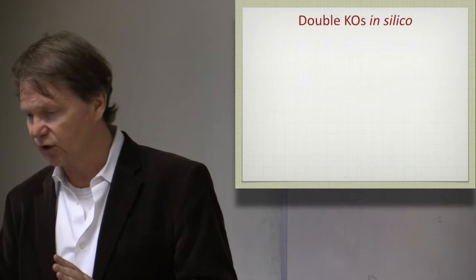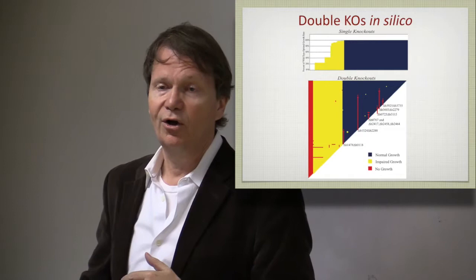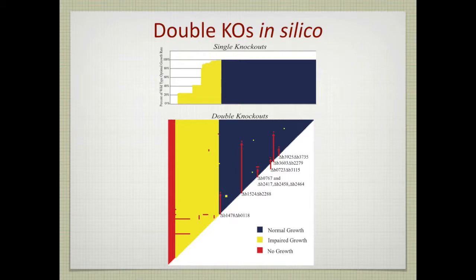Now, you can actually also do multiple knockouts in silico. And this is, of course, much easier to do computationally than experimentally. Although, I must say, now with the new genetic editing tools, we'll probably be making large double knockout libraries and maybe triple knockout libraries and who knows what. But in silico, this is pretty easy. So, on the top of this panel here, we show the outcome of single gene knockouts. You can take each one of the single gene knockout strains and then remove all the other genes and pair them up in that way. And then you get those predictions that are shown on the bottom.